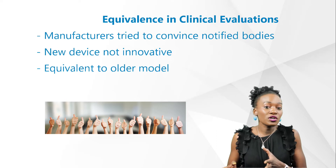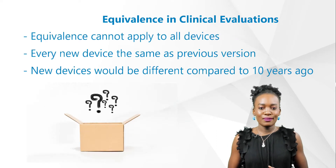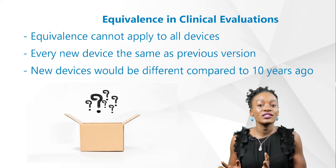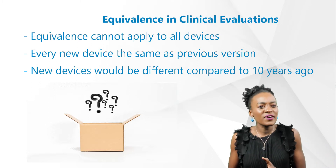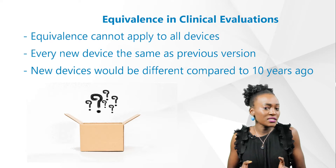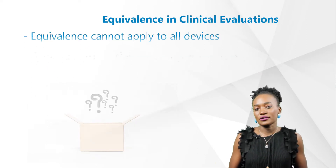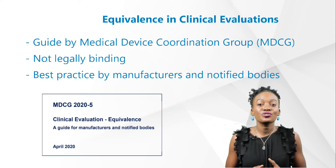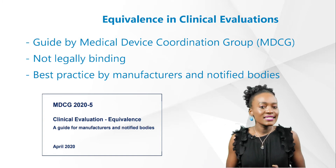That was the reason why many medical device companies tried to convince the notified bodies that their new medical devices were not that innovative but rather equivalent to an older model or to a model of a competitor. But what happens when a company states that every new version is equivalent to the last CE marked version? The new device would still be very different from the version from 10 years ago which had already been tested in a clinical trial. In April 2020, the Medical Device Coordination Group published a new guide on how to interpret the term equivalence.